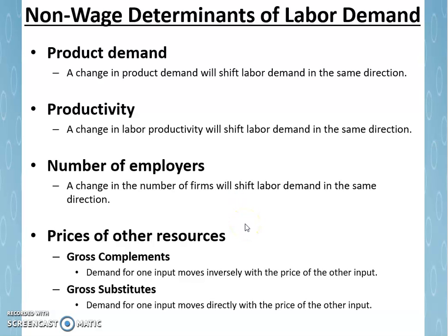Lastly, the price of other resources influences the demand for labor. In this sense, we need to think of complements to labor and substitutes to labor — we say gross complements or gross substitutes. For example, a truck driver is a unit of labor, but a truck is a complement to that unit of labor. So what happens if the price of trucks goes up? Well, that would decrease the demand for labor. If it's more expensive for businesses to get trucks, then they're not going to demand as many truck drivers. Notice how the price of the gross complement moves inversely with the demand for the input: price of trucks goes up, demand for truck drivers goes down.